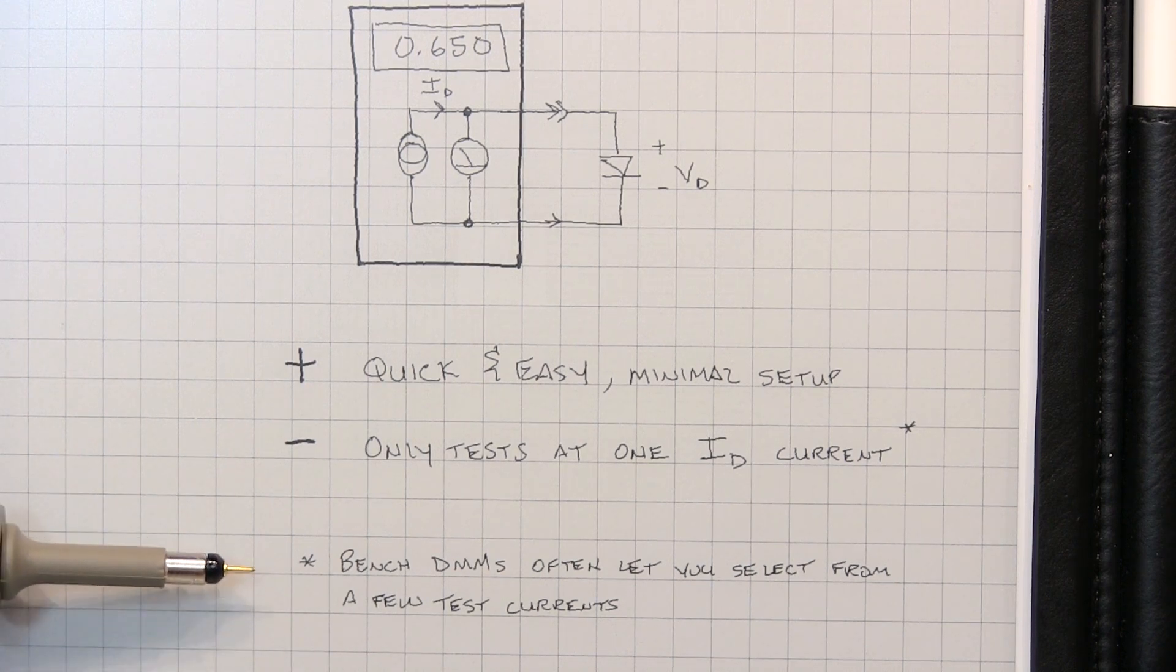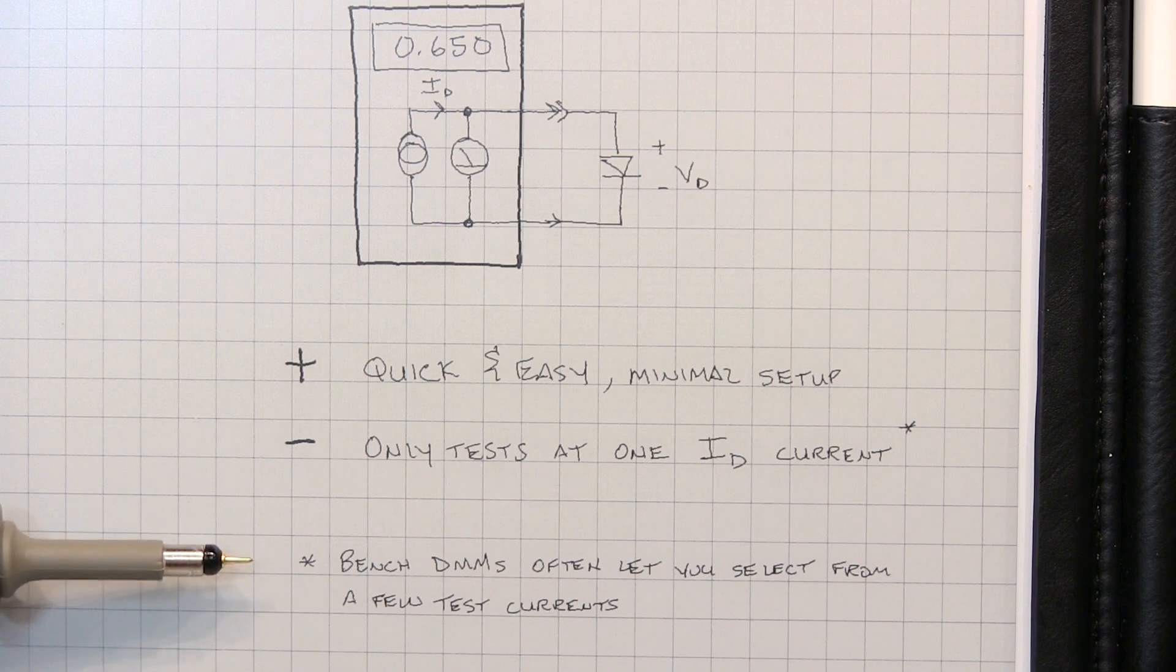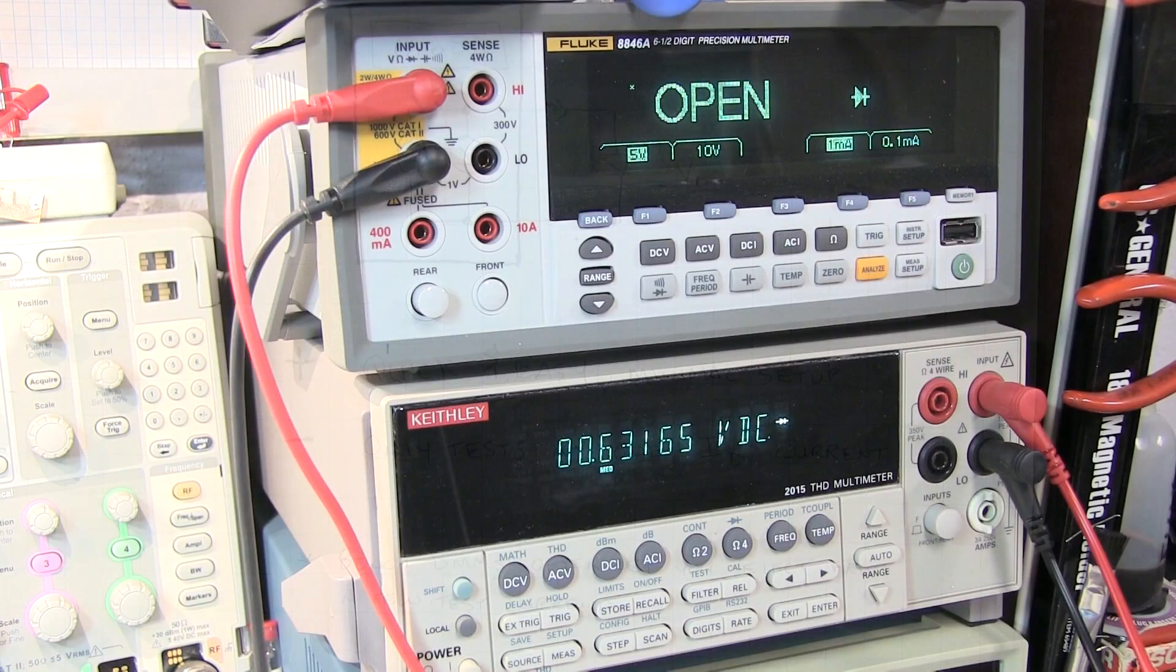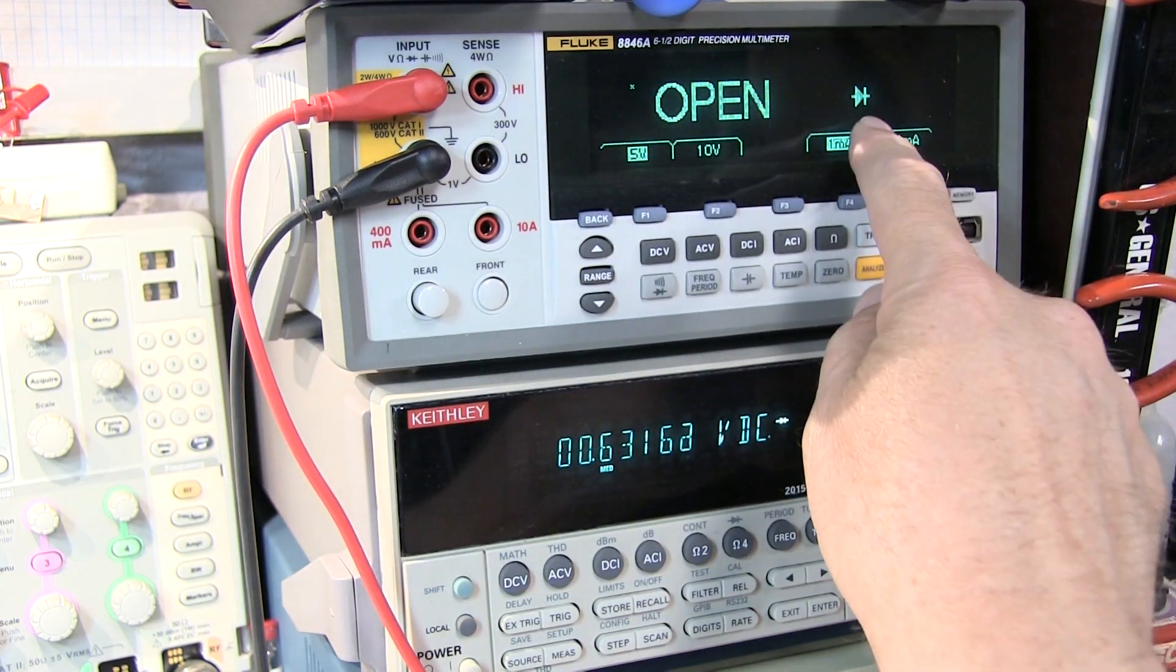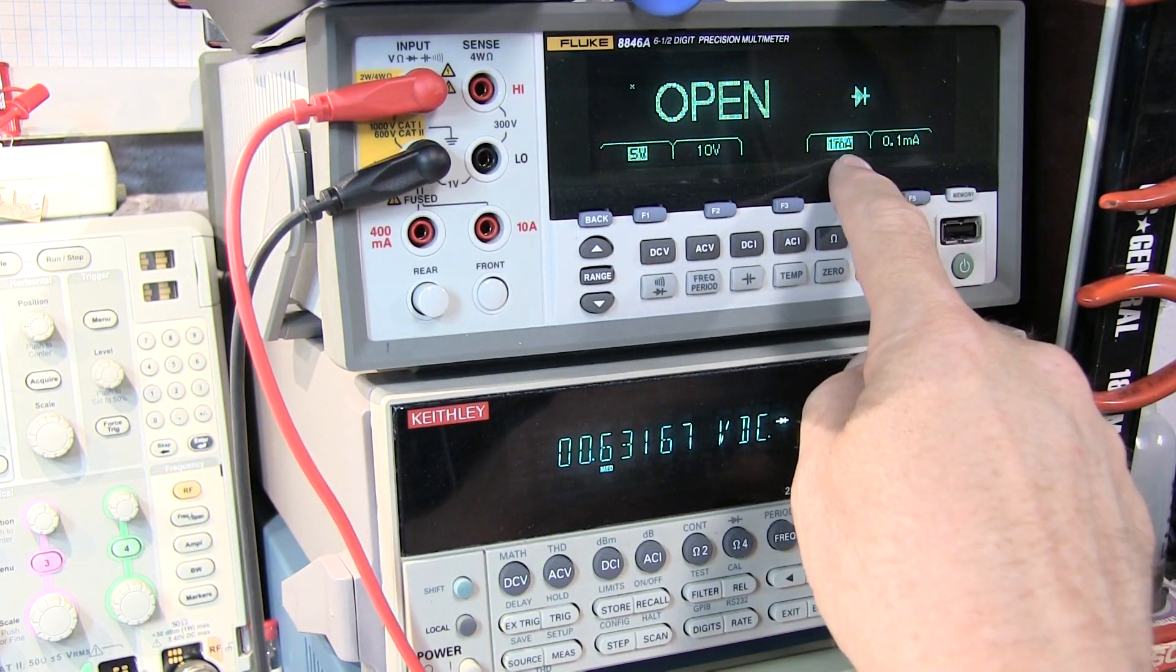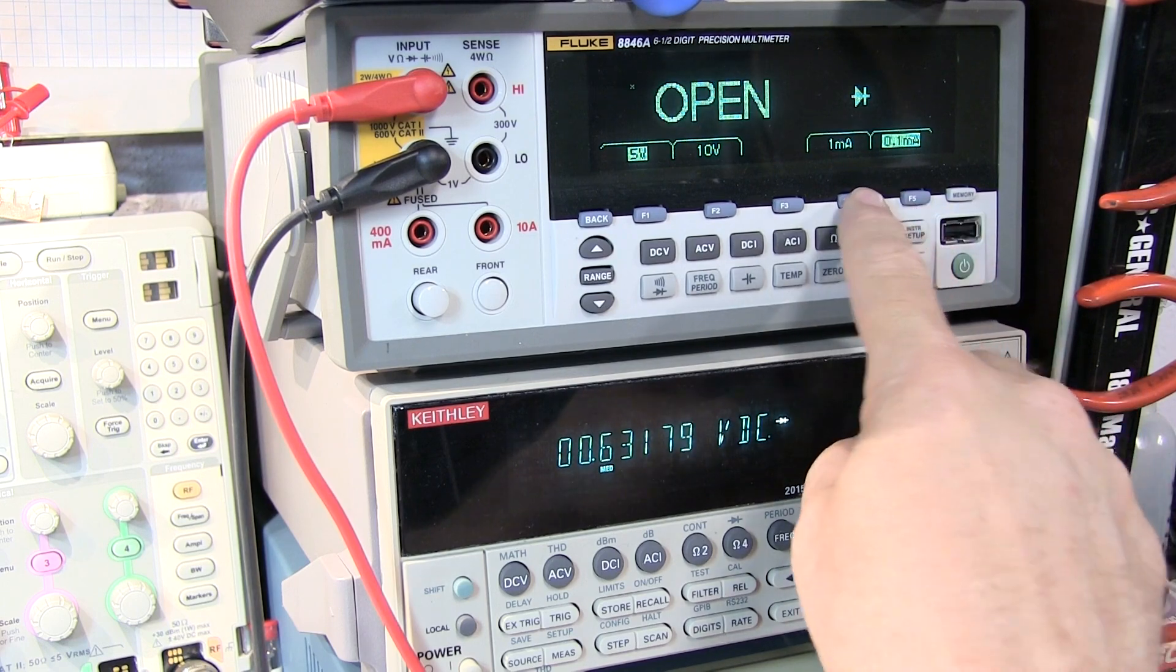Now oftentimes the higher end bench DMMs will give you a choice of what current to use to actually go test the diodes. So in the case of this Fluke 8846, we can see that in the diode test mode we have a choice of 1 milliamp or 100 microamps test current.